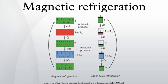Thermal contact with the heat sink is then broken so that the system is insulated, and the magnetic field is switched off, increasing the heat capacity of the refrigerant, thus decreasing its temperature below the temperature of the heat sink.